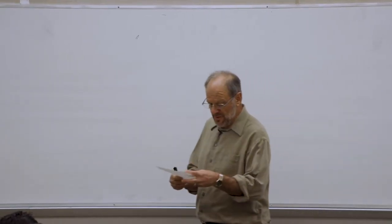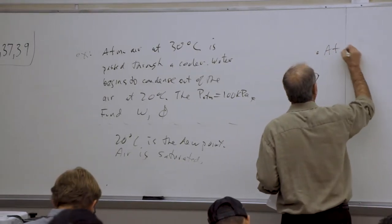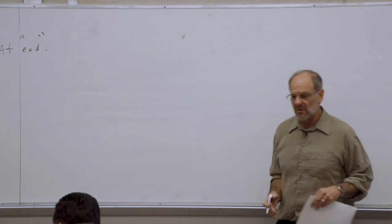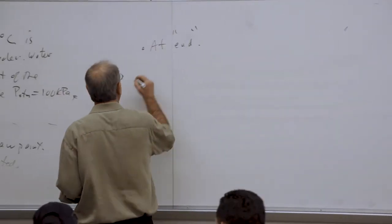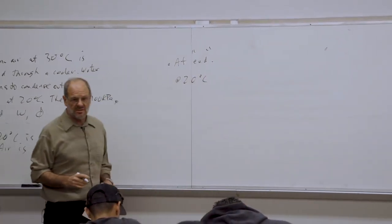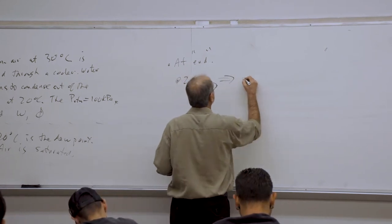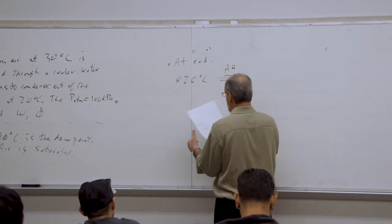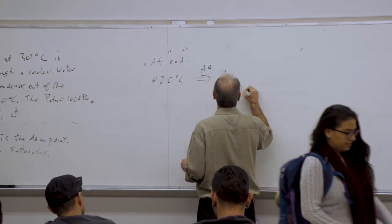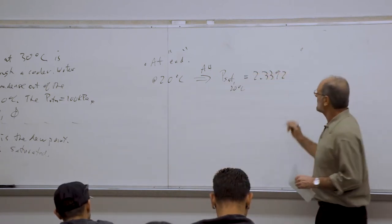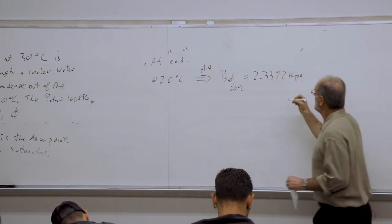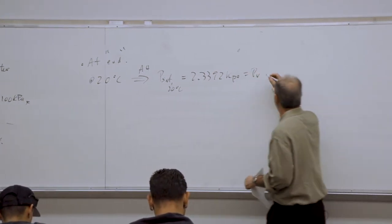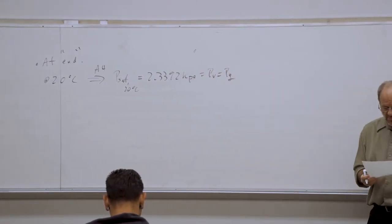First, let's look at the end of the process — when condensation begins to occur — at which point we know the air is saturated at 20 degrees Celsius. We go into table A4, our water tables, and find the saturation pressure: P_sat at 20 degrees Celsius is 2.3392 kilopascals. This is the partial pressure of the water vapor at that final point as condensation begins, and because it's saturated we can also write that as P_G. So we can then find the specific humidity — also called absolute humidity or humidity ratio — at that end state at 20 degrees Celsius using the equations we previously developed.